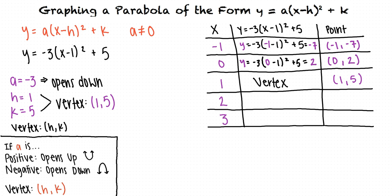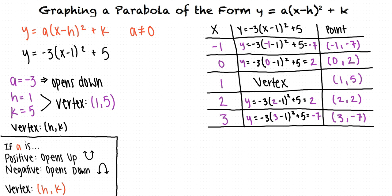Next, we can plug 2 in for x, which also results in a y value of 2. We now see that the points negative 1 comma negative 7, 0 comma 2, 1 comma 5, 2 comma 2, and 3 comma negative 7 all lie on the graph.